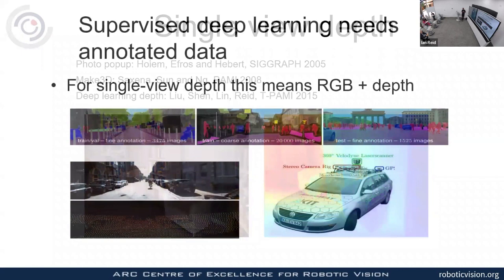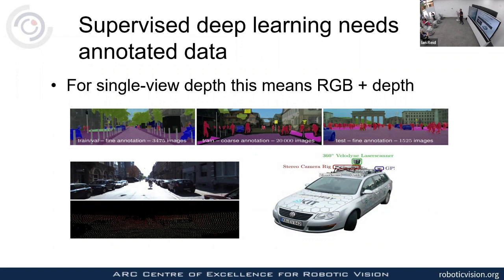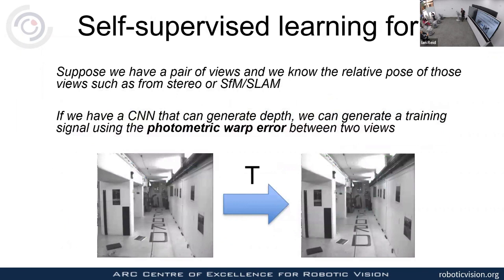One problem with turning a camera into a 3D sensor from a single view is the need for training data. Previous supervised work from Chumai Shen used Kinect or LiDAR data with corresponding images, which is costly because it requires synchronized cameras and LiDAR. My postdoc Ravi Garg had a beautiful idea — now widely imitated but first published by us in 2016 — that avoids this requirement.